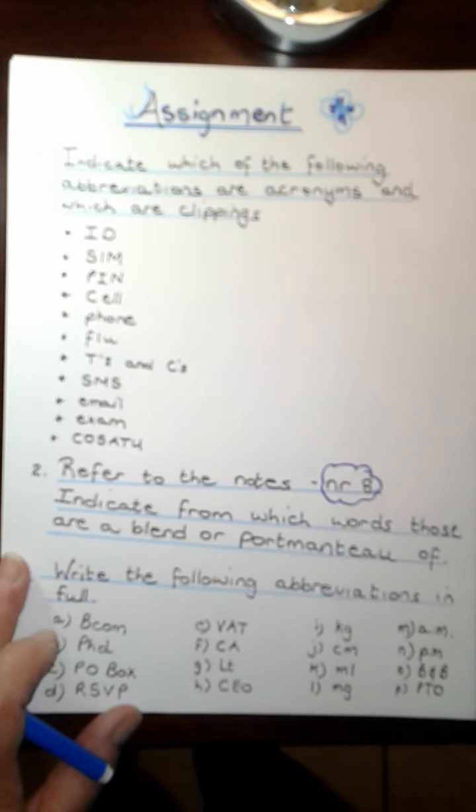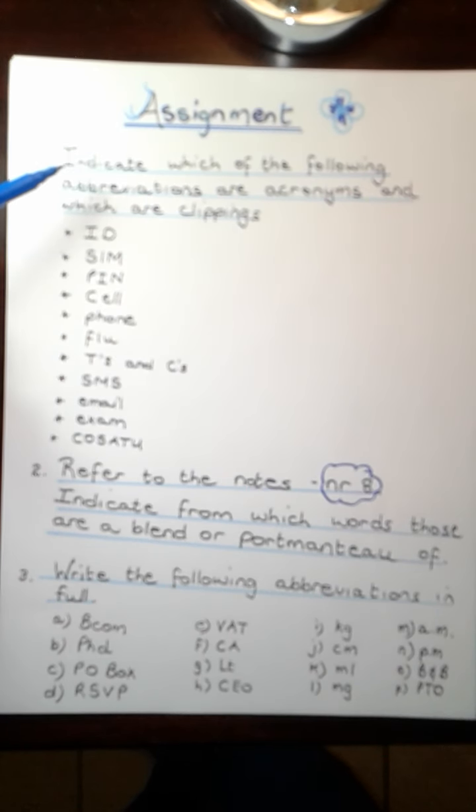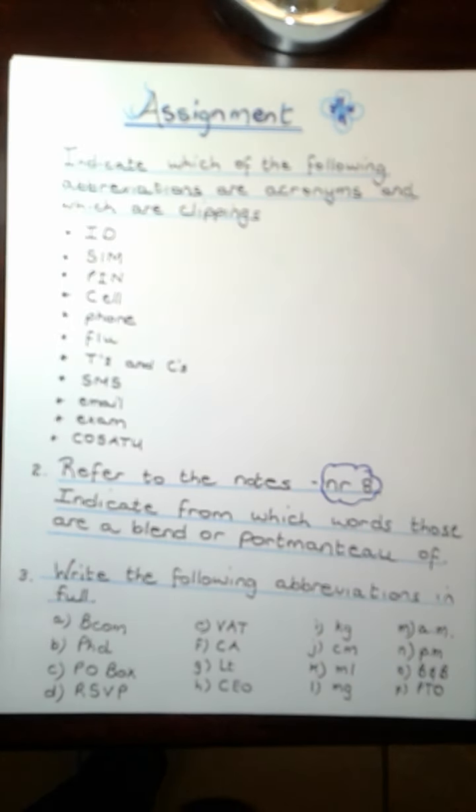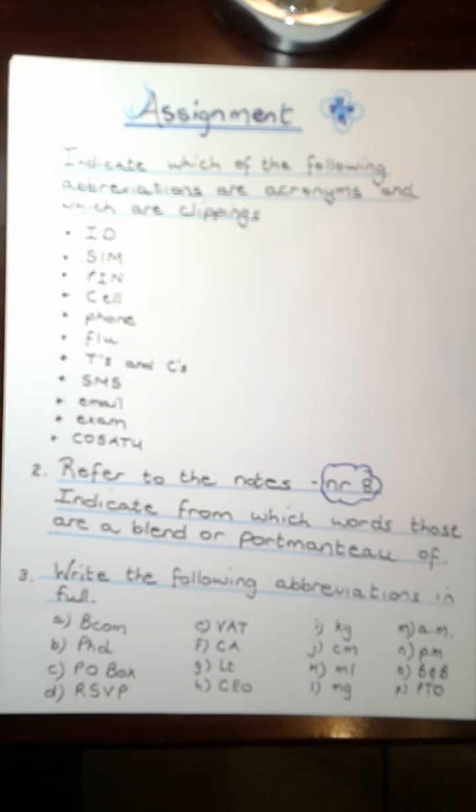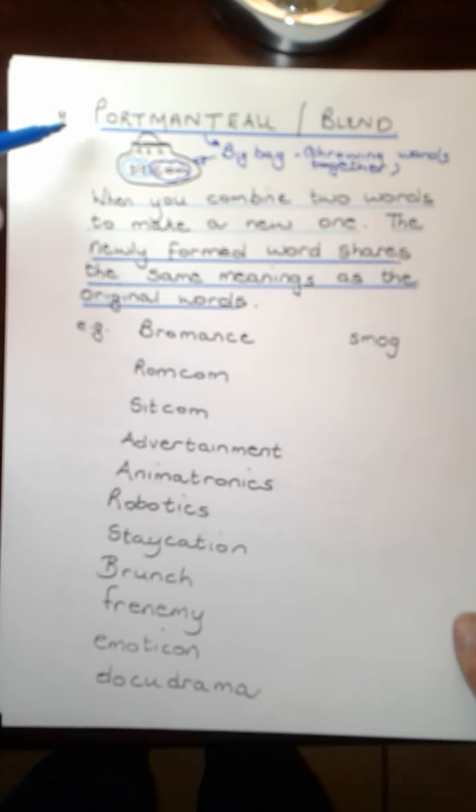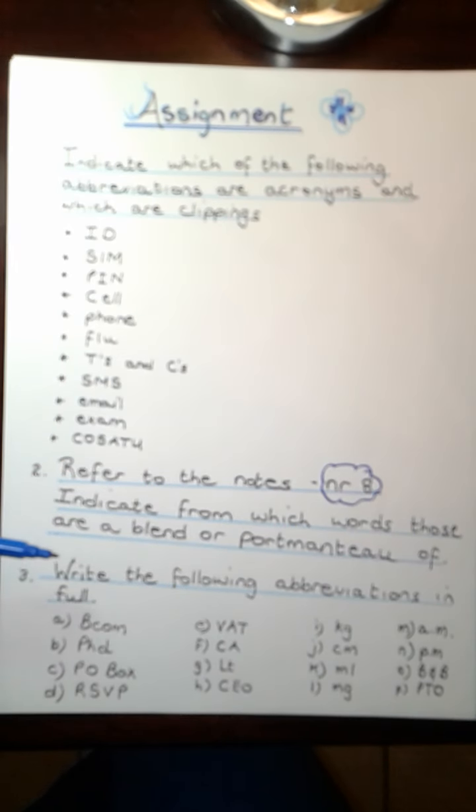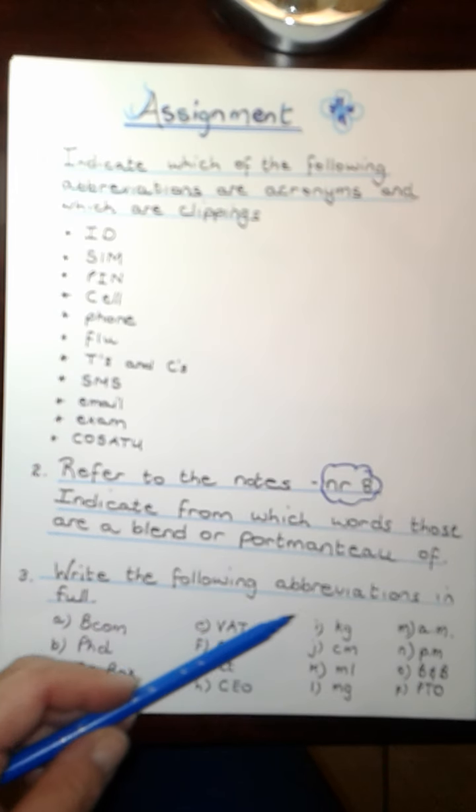Your assignment for your abbreviations. First of all, indicate which of the following abbreviations are acronyms and which are clippings. ID, SIM as in SIM card, PIN, cell, phone, flu, T's and C's, SMS, email, exam and COSAT. Which one is an acronym and which one is a clipping. Then number two, refer to the notes, number eight, which is this one on portmanteau. I want you to go and look at these words that I gave you as an example and indicate from which words those are blended or a portmanteau is made of. Then number three, write the following abbreviations in full.